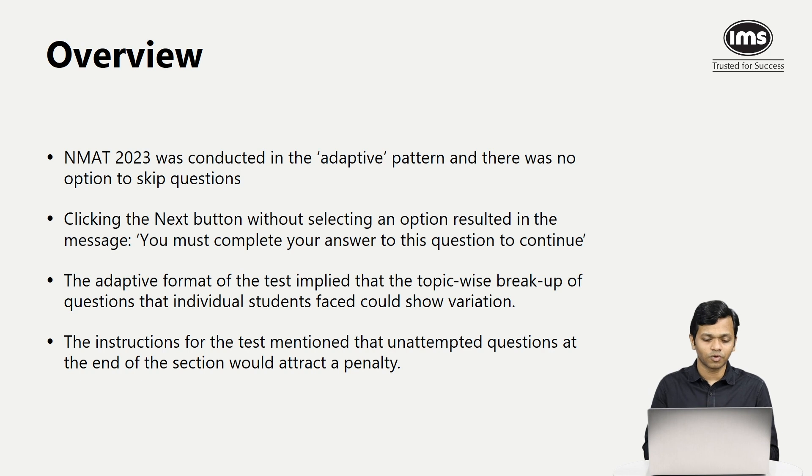Lastly, the instructions for the test mentioned that unattempted questions at the end of the section would attract a penalty. We don't know exactly how that penalty works and what is the extent of that penalty, but yes, there is a penalty for not completing the section. For example, if in a particular section with 36 questions you're able to attempt only 32 questions and couldn't see the last four questions, there will be a penalty involved and your score will drop. So it's important to complete all the sections and pace yourself nicely.